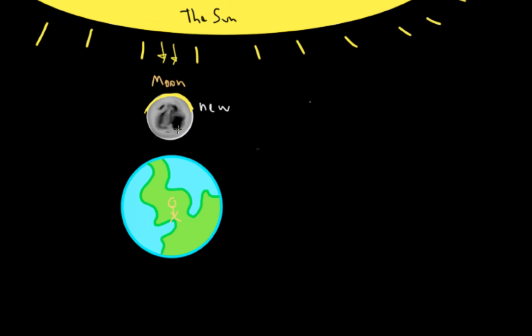Since the moon is only visible from reflected light from the sun, none of this light here shown in yellow is going to be able to reach the earth. So the moon isn't really seen at all during its new phase.